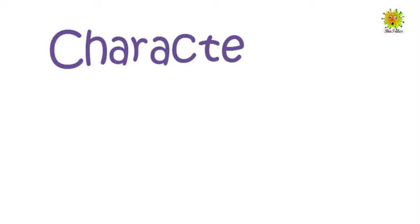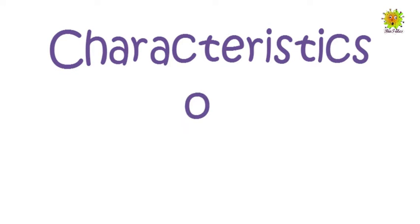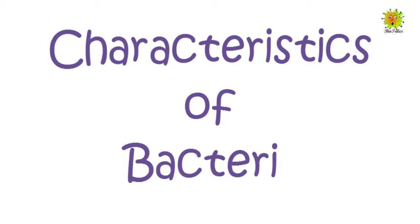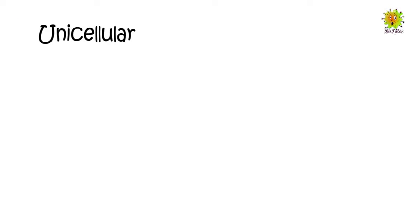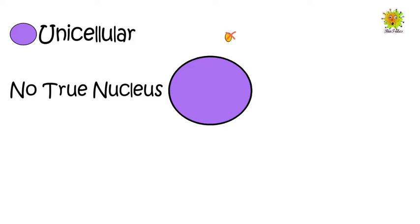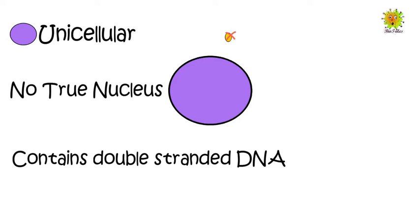Hello everyone, today we are going to talk about characteristics of bacteria. Bacteria are unicellular. They do not have a true nucleus, although they contain double-stranded DNA present in an irregular shaped structure called a nucleoid.